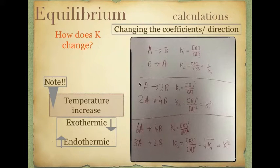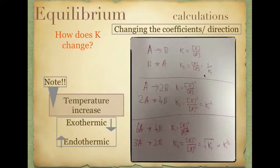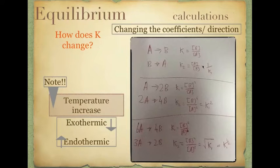If we reverse our reaction — for example, if we have A going to B and change it to B going to A — our K value gets the inverse: it becomes 1 over K. Here's the maths: K1 is the concentration of products over reactants, B over A. If we reverse it, K2 is A over B, which is in fact 1 over K1. So if you reverse the reaction, you get the inverse of the first K value.